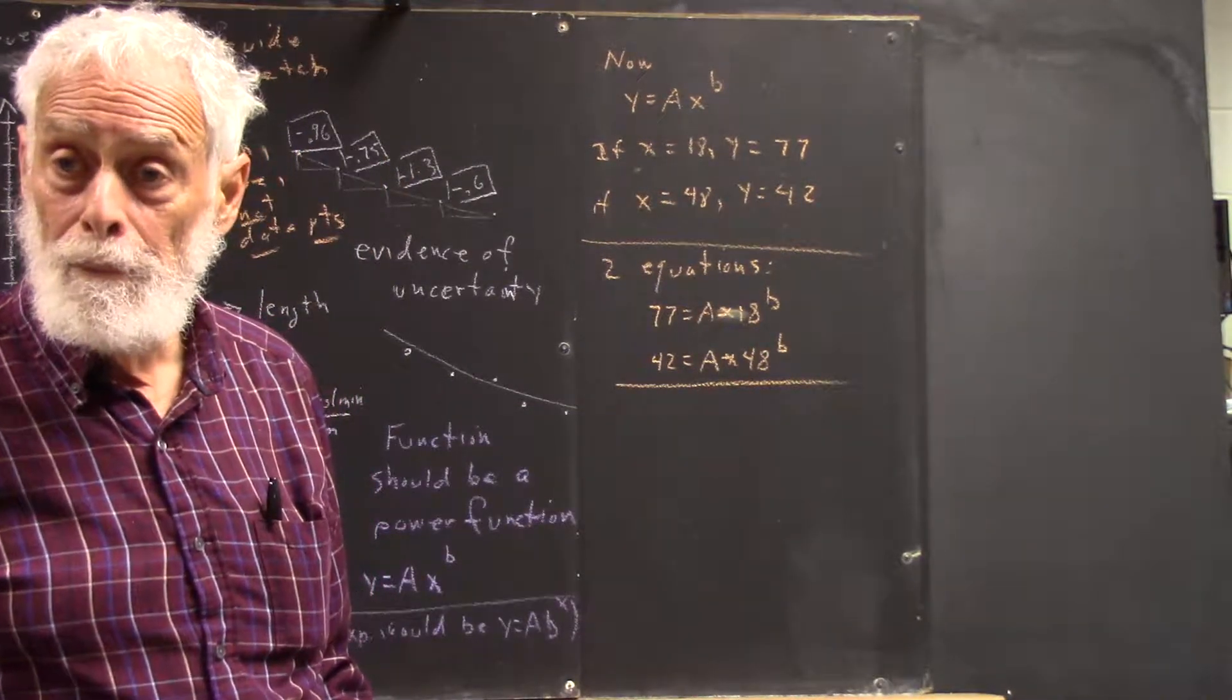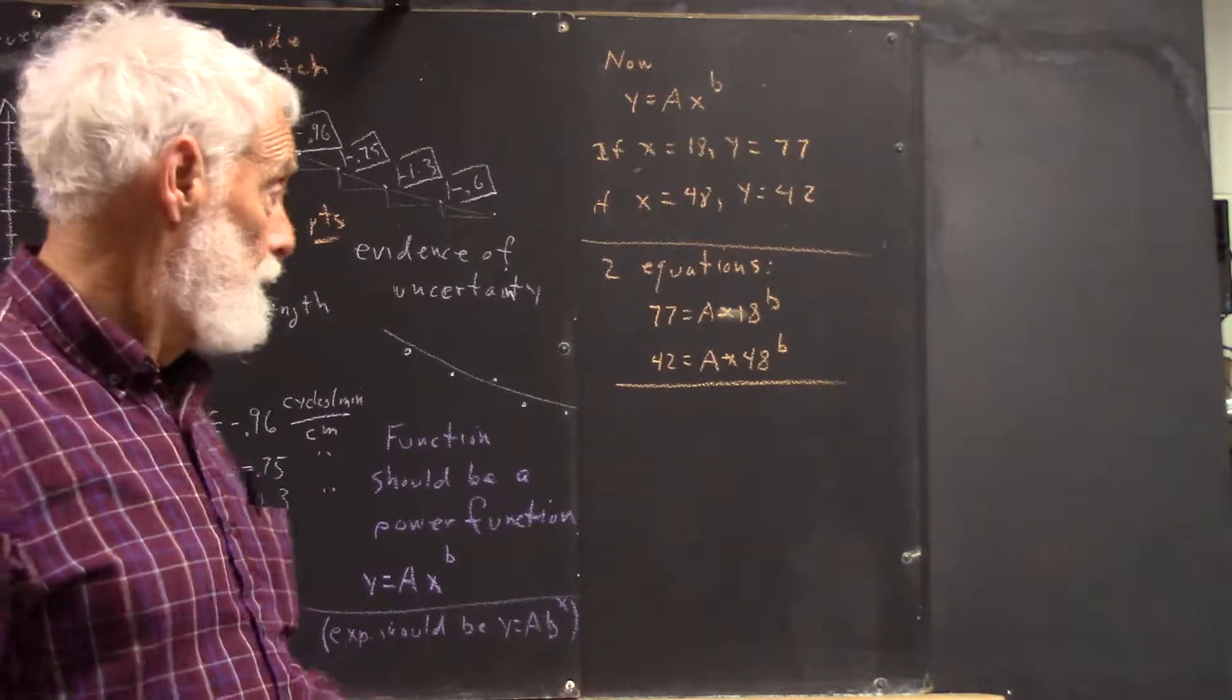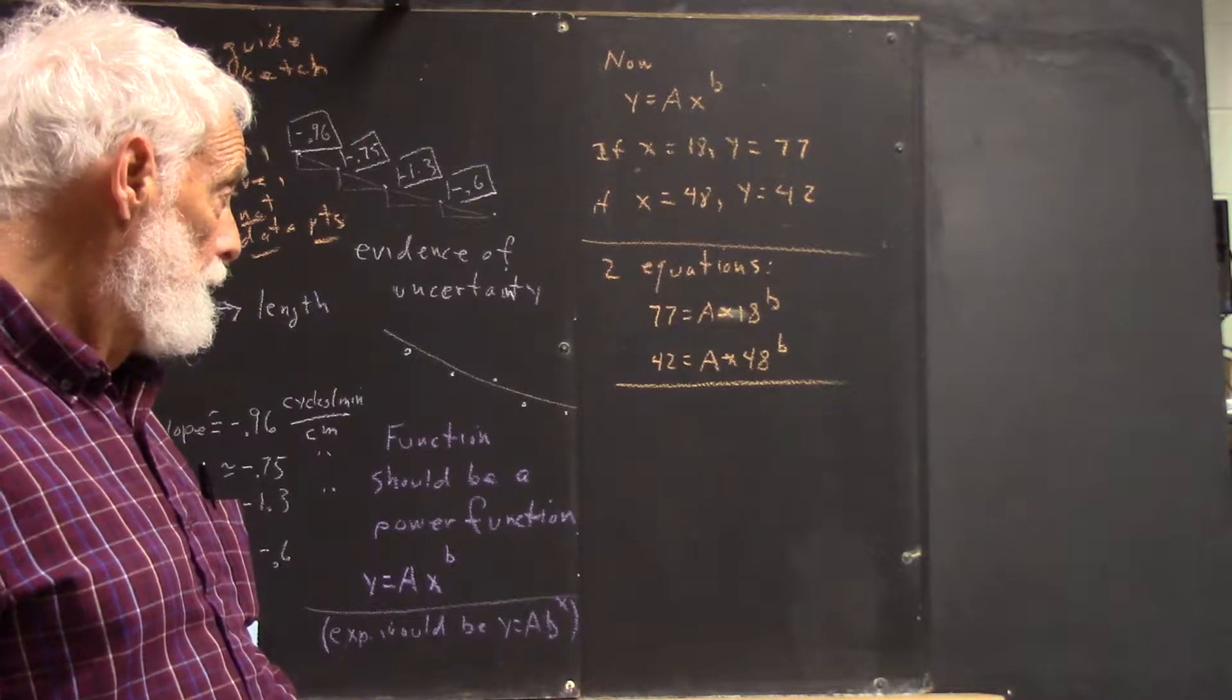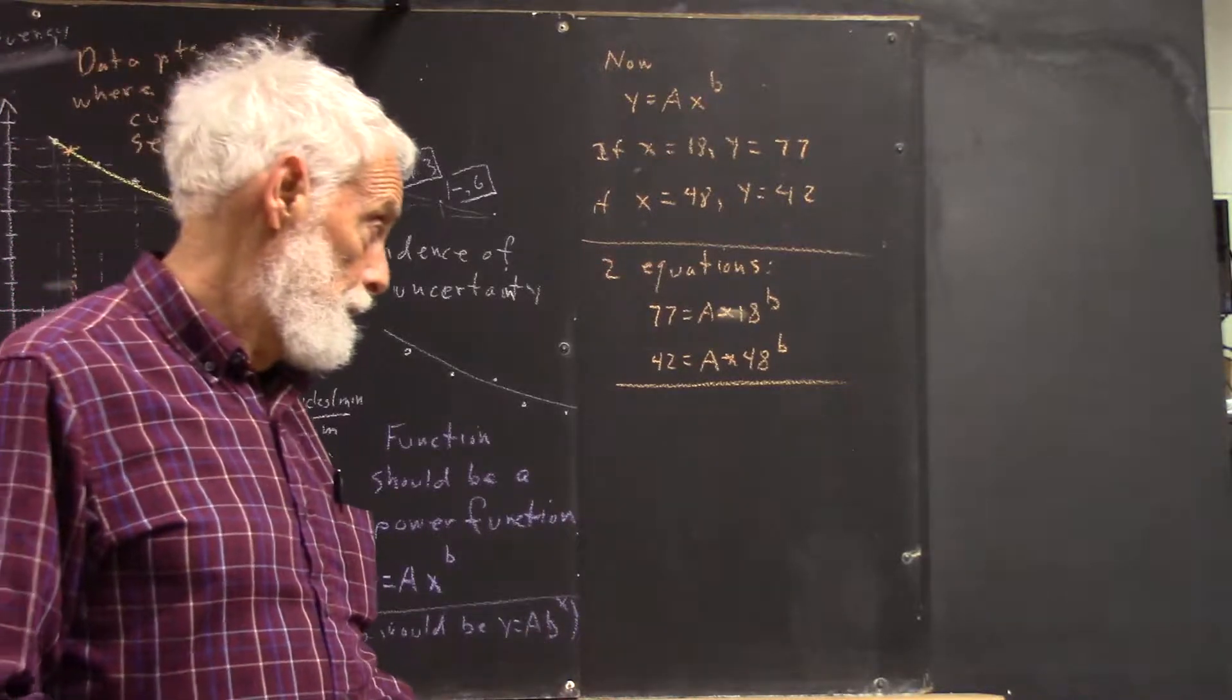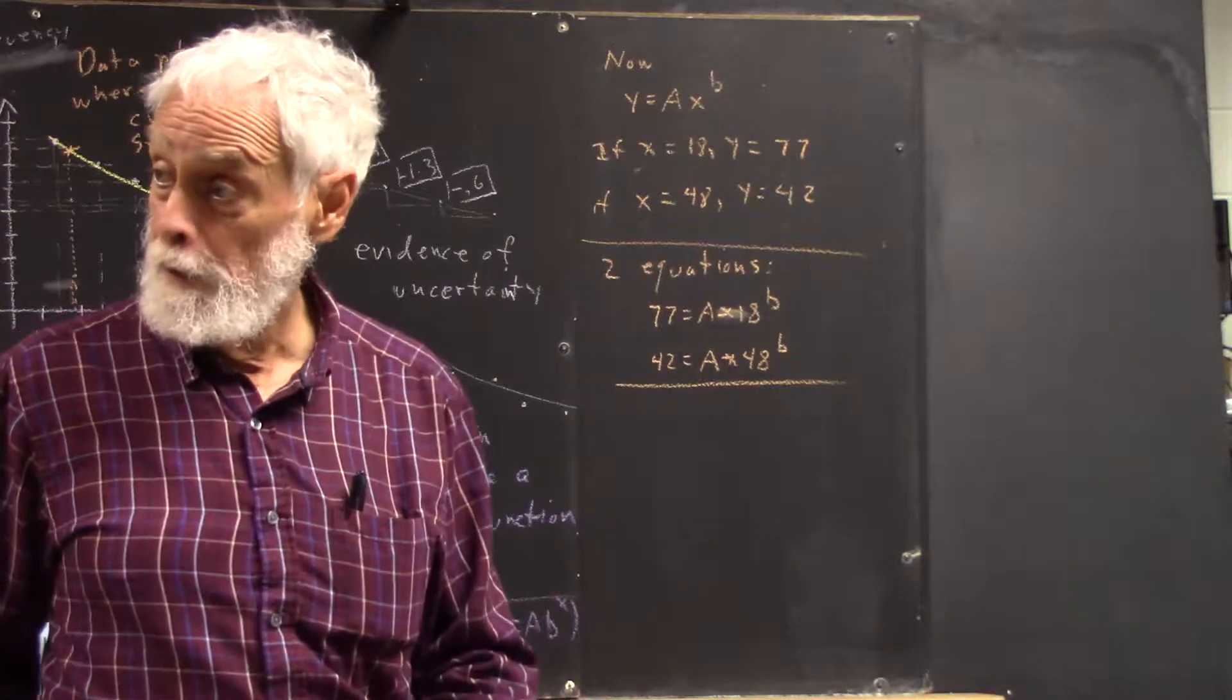You're going to take one of them and, like, if you take the top problem, you're going to divide it by 18B, both sides, and it'll be 77 over 18B equals A, and then you'll plug that into the second problem so that you're eliminating one of the variables. Yeah, what she said. Oh, right. You're eliminating a variable. Okay?